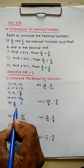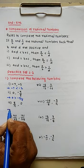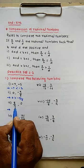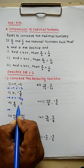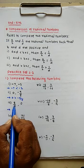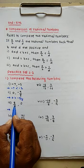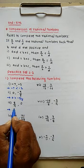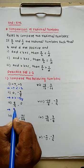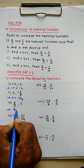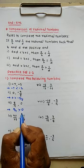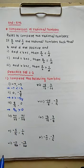Third example: 8 upon 7 compared to 0. A positive number is greater than 0, so 8 divided by 7 is greater than 0.